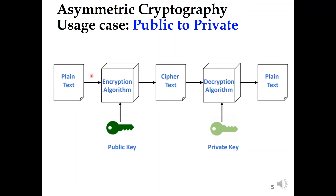Here is more detail. We have a plain text, and if we want to send this message to someone, we use the public key of that person to encrypt the plain text data to become a ciphertext. As the receiver, that person will use their own private key to decrypt the information to get back the plain text.